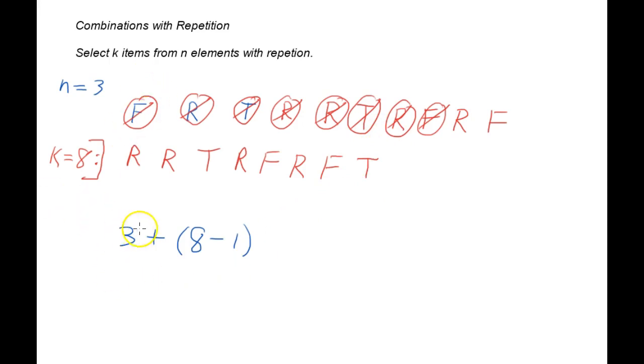Now we can and should use the letters to code this. So we can say that three was the original n, the number of items or elements. K was the eight. And then we will always have the minus one because we don't replace that last one. So we are choosing from n plus k minus one.